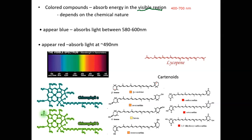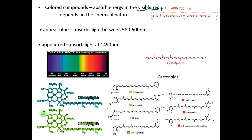Shorter wavelength equals greater energy, so the shorter the wavelength, the greater the energy of the photon being absorbed. The color that is absorbed by the compound is actually dependent on the nature of the compound — specifically, the chemical structure of the compound determines whether something is going to absorb light in the visible region or not.